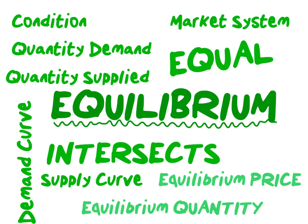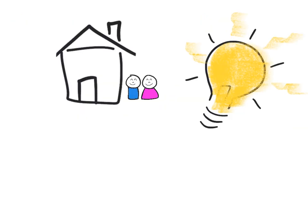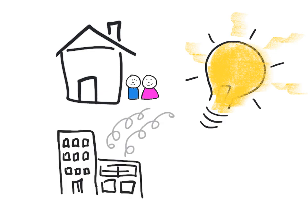Equilibrium - why is this so important? First, consider our households, the demanders in the economy. Second, consider our firms, the producers in the economy.